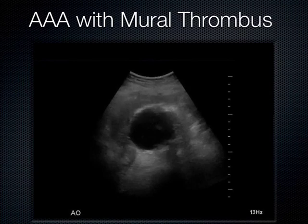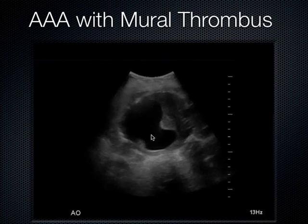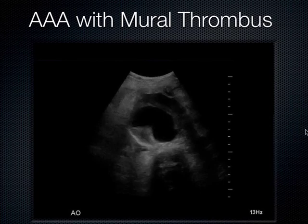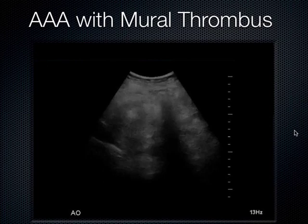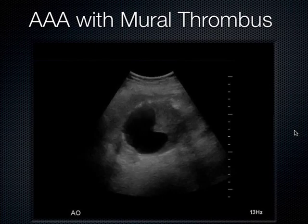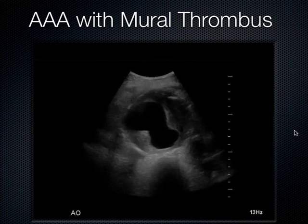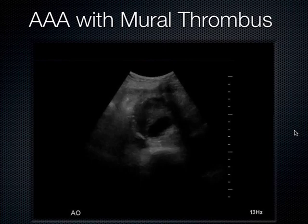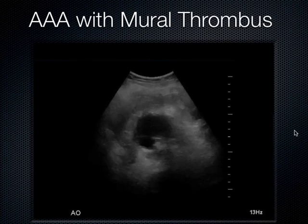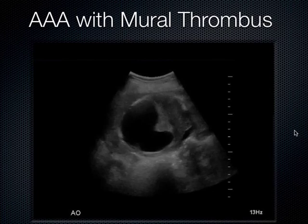When you see an abdominal aortic aneurysm, it may have a large mural thrombus. That thrombus dampens the pulsatility of the aorta, which is why physical exam has roughly coin-toss sensitivity for detecting AAA — even one that's 8–10 centimeters in diameter. The mural thrombus absorbs the pulsatility, making it difficult to palpate.